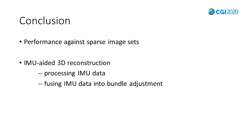To conclude, aiming at improving reconstruction performance against sparse image sets, we put forward an IMU-aided 3D reconstruction system. The two essential parts are processing IMU data and fusing the data into bundle adjustment. By a common filter and the Li-algebra method, we managed to compute the rotation matrix of the camera from raw IMU data. And by adding an extra restriction with lambda, we managed to build the IMU data into the bundle adjustment — the two essential parts of traditional 3D reconstruction.